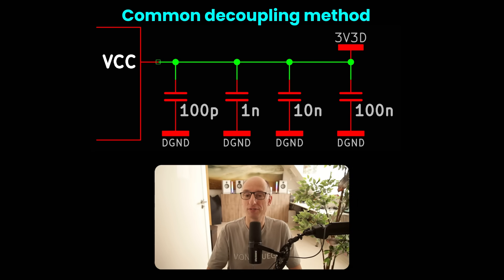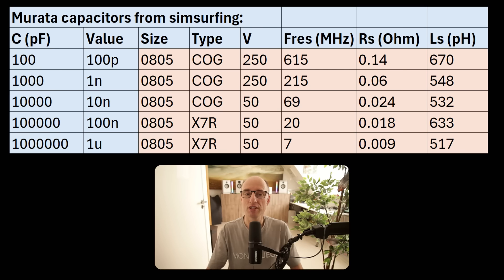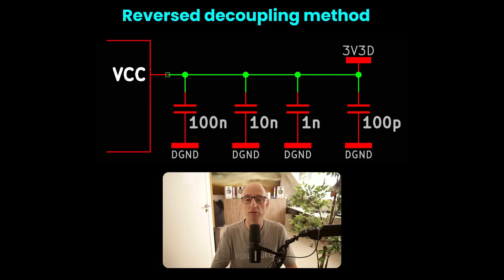Another important factor is capacitor placement. The common theory is that smaller capacitor values are better for RF, so you would place them as close as possible to a power supply pin of an IC. But let's analyze this using the models. The smallest capacitor actually has the highest series resistance — 140 mΩ for 100 pF versus 18 mΩ for 100 nF. The inductance of the 100 nF is better than the 100 pF as well. So the 100 nF should be closest to the pin for good RF decoupling. It goes against decades of textbook wisdom, but larger value SMD capacitors are actually slightly better for RF.